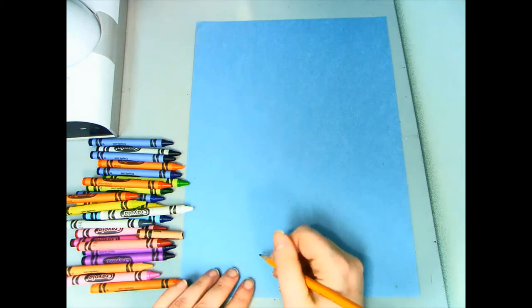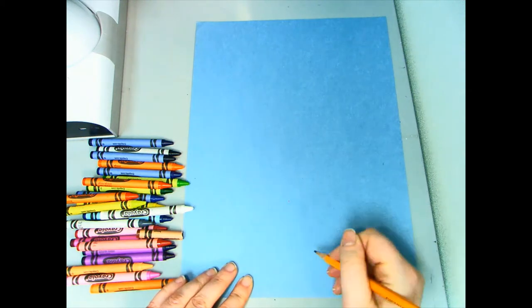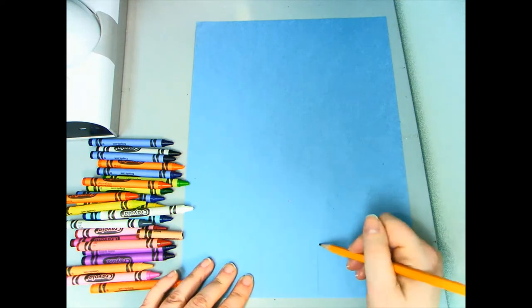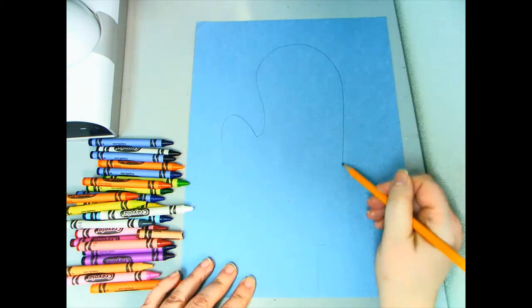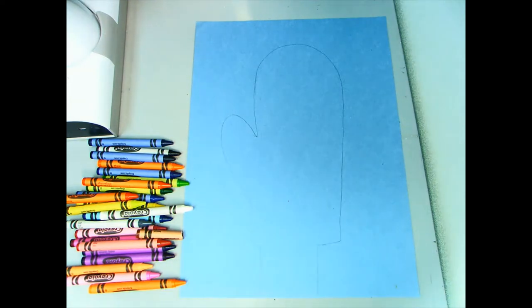I'm going to start with my arm. It's not going to be very wide and it's not going to be very long. Once you have a shape you like, then you can take your crayons and you can decorate the outside.